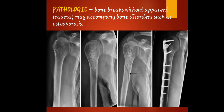The next type is the pathologic fracture. The bone breaks without apparent trauma, and it may accompany a bone disorder such as osteoporosis. This is a bone that breaks on its own but eventually leads to a certain disease like osteoporosis.